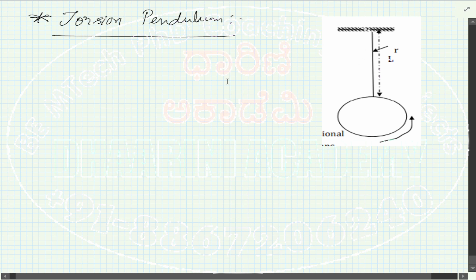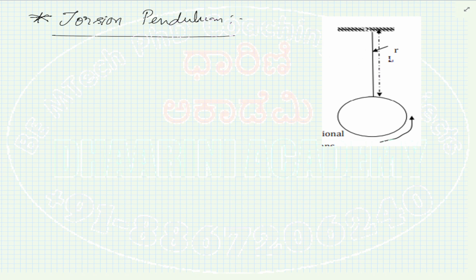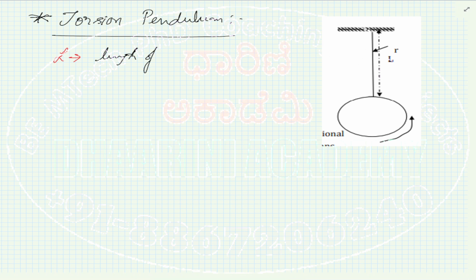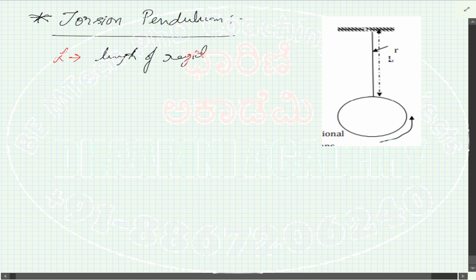This is the diagram we are looking at. There is a rigid wire with length L — that is the total length marked here. The wire is a rigid wire and the radius of that wire is small r, which is the actual width or radius of this wire.